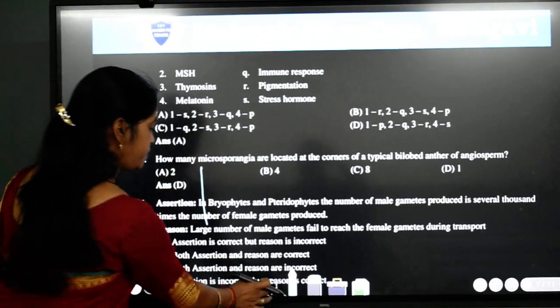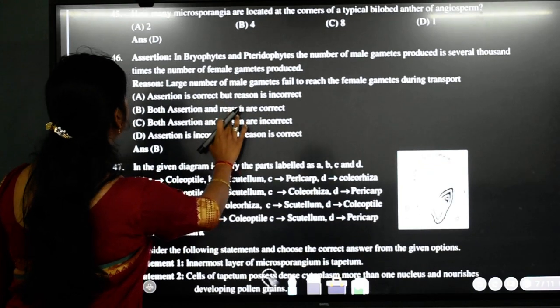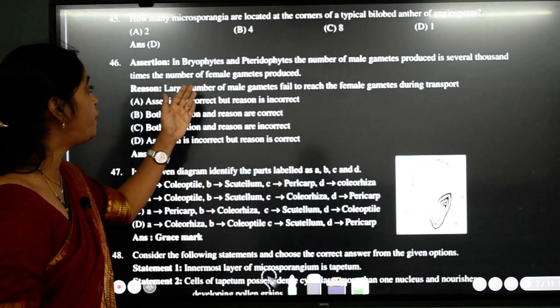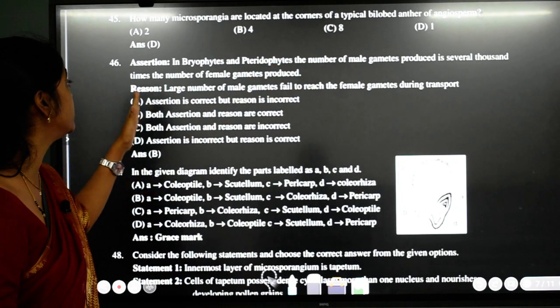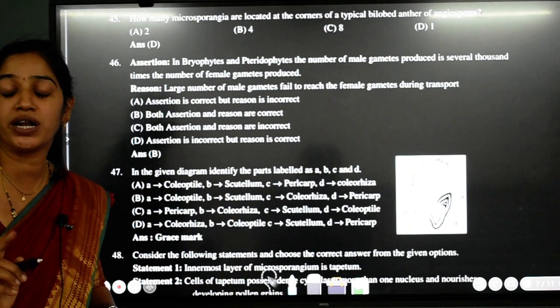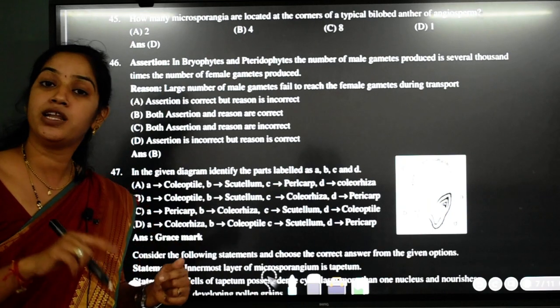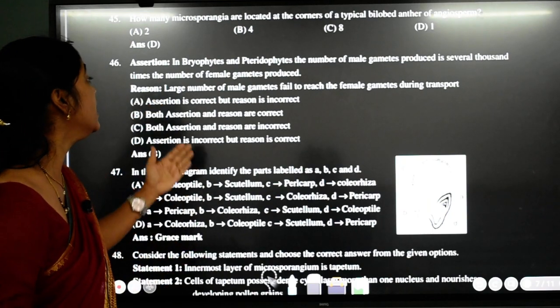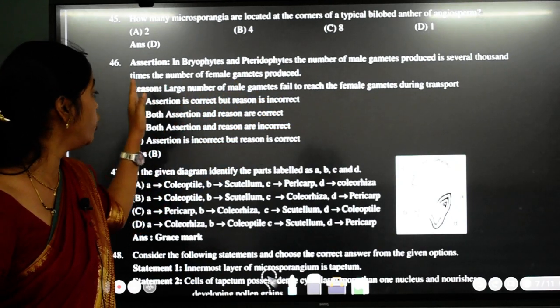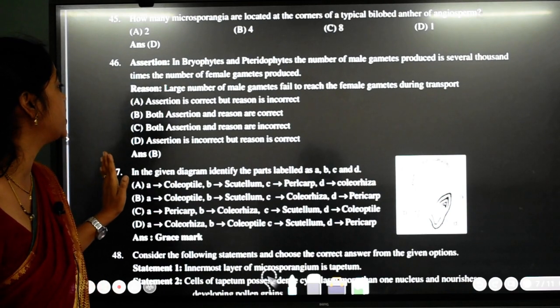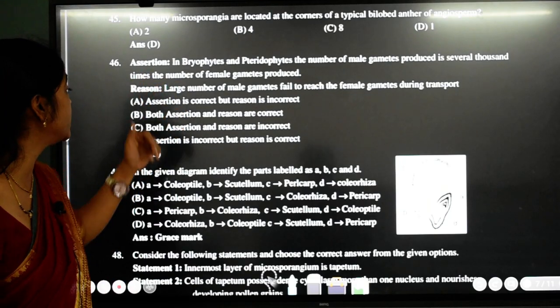46th question. Assertion and reasoning type of question here. In bryophyte and pteridophyte the number of male gametes produced is several thousand times the number of female gametes produced. 100% correct student. Why? Because here the male gamete has to swim in the water to reach the female gamete. The number of male gametes produced is more. Look at the reason. Large number of male gametes failed to reach the female gamete during transport. So if you look at both the statements, both the statements are correct. And the reason is the correct reason for the assertion. So the answer here is B.